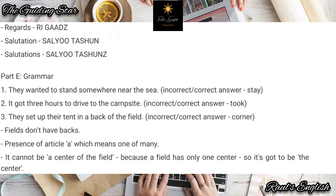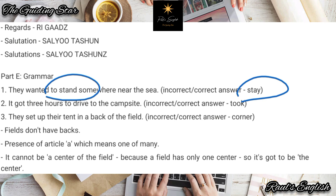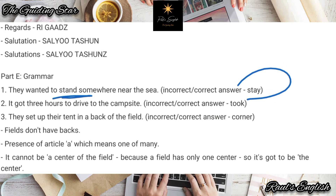Let's go on to grammar — the last part of today's notes. I'll put up another video where we'll do the letters. Number one: 'They wanted to stand somewhere near the sea' — this doesn't make sense. Why would they want to stand near the sea? It should be 'they wanted to stay somewhere near the sea.' 'Stand' makes no sense there.